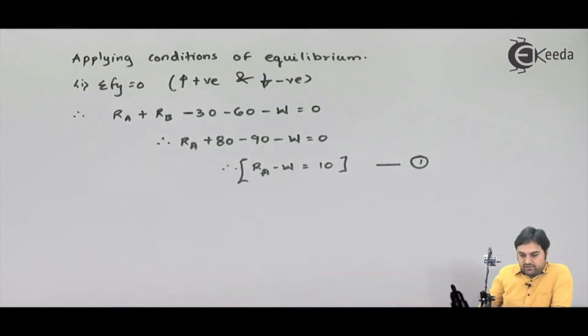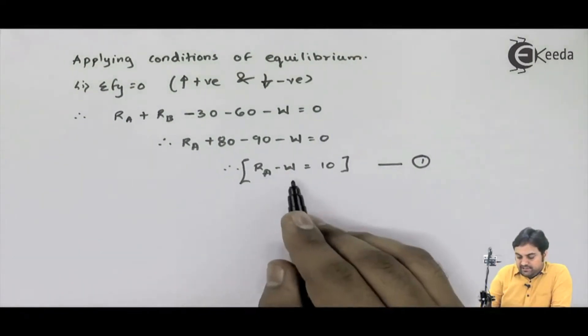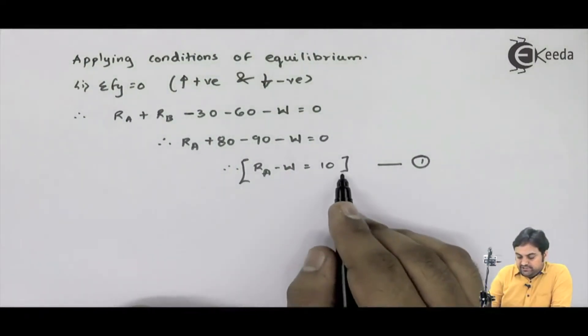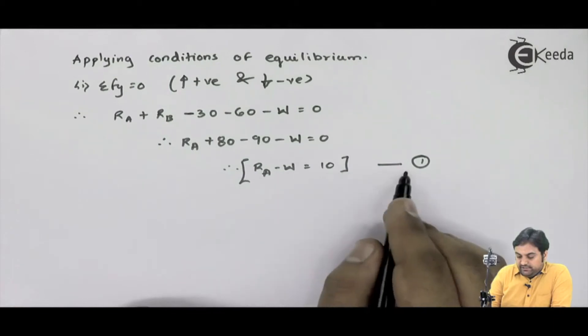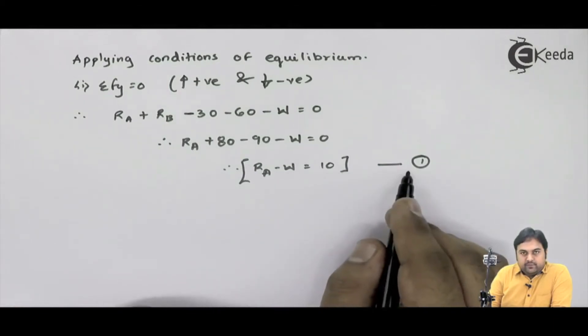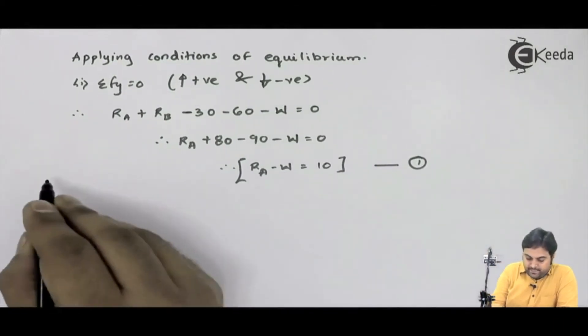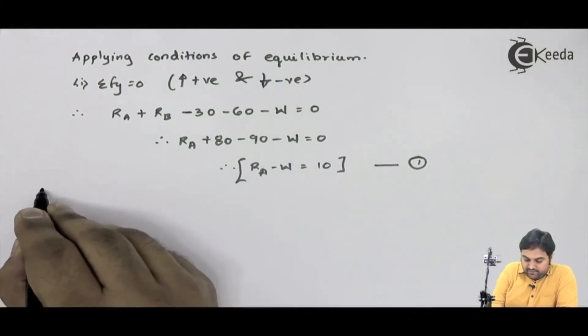So we have RA minus w equals 10. That is my Equation 1.